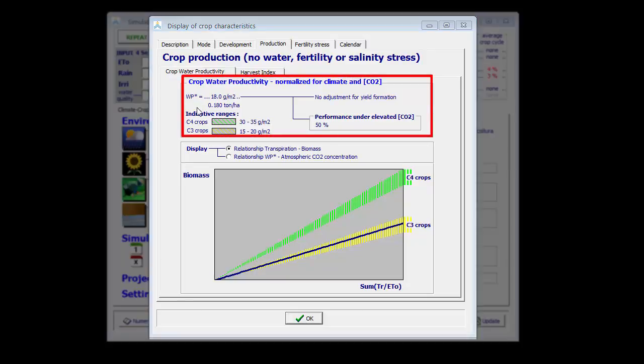I am in the crop file and now in the production tab sheet I can find the biomass water productivity. It is the normalised water productivity, equal to 18 grams per square meter, which was normalised for climate and for the CO2 concentration of the year 2000.